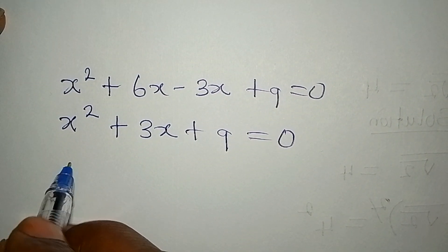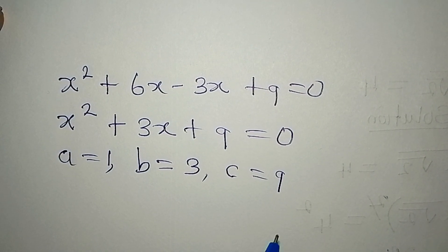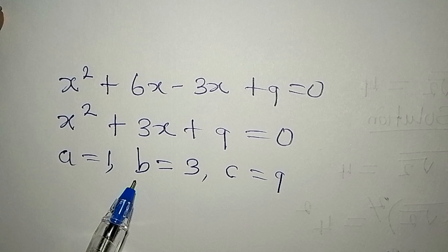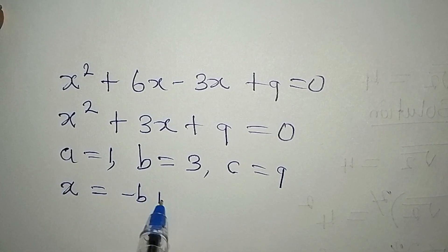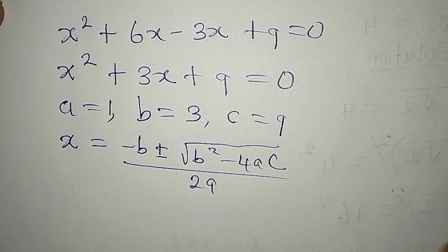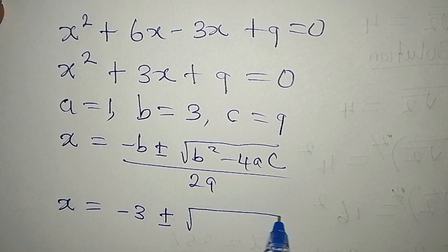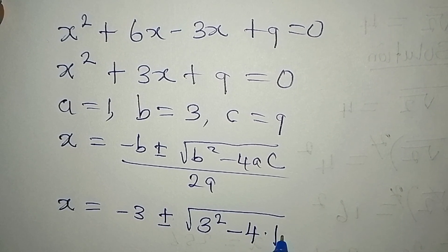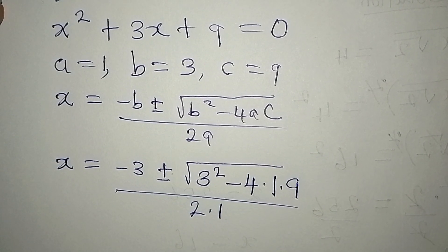We apply the quadratic formula. For this equation, a equals 1, b equals 3, and c equals 9 — a is the coefficient of x squared, b is the coefficient of x, and c is the constant. The formula is x equals negative b plus or minus square root of b squared minus 4ac, all over 2a. Substituting: x equals negative 3 plus or minus square root of 3 squared minus 4 times 1 times 9, over 2 times 1.